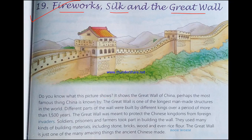Do you know what this picture shows? It shows the Great Wall of China — perhaps the most famous thing China is known by. The Great Wall is one of the longest man-made structures in the world. Different parts of the wall were built by different kings over a period of more than 1500 years. The Great Wall was meant to protect the Chinese kingdoms from foreign invaders. Soldiers, prisoners and farmers took part in building the wall. They used many kinds of building materials including stone, bricks, wood and even rice flour.